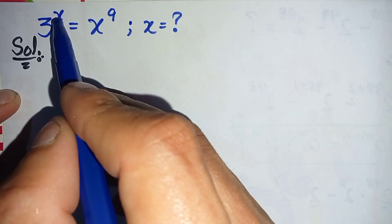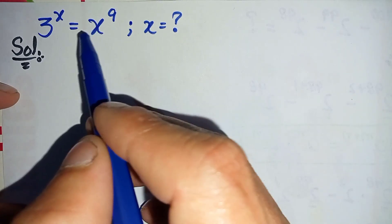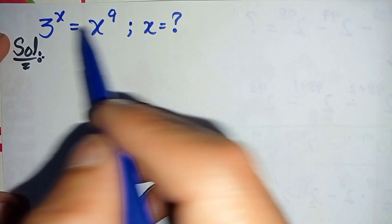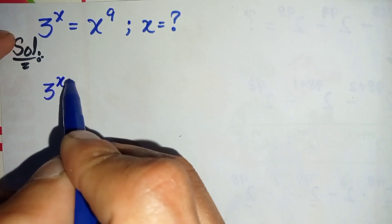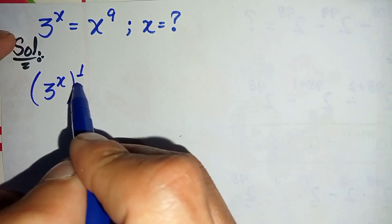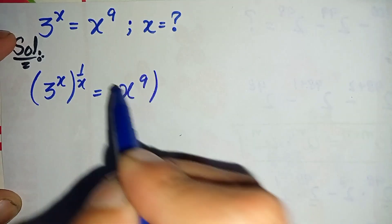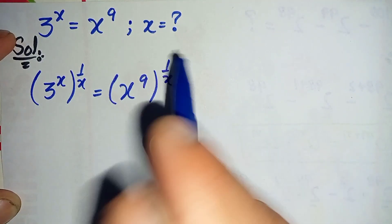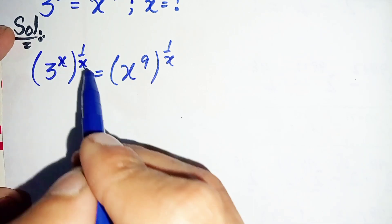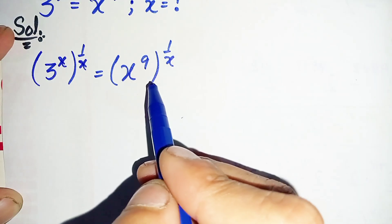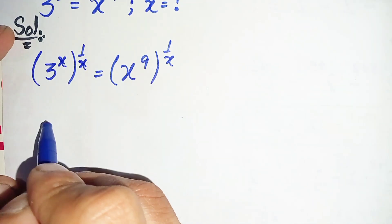First I will try to eliminate x from the power on the right hand side and bring it to the left hand side. To eliminate this power we will take 1 over x in the power on both sides. In the left hand side, multiplying these two powers, this x and this x will be cancelled, and in the right hand side we will interchange the position of these two powers.